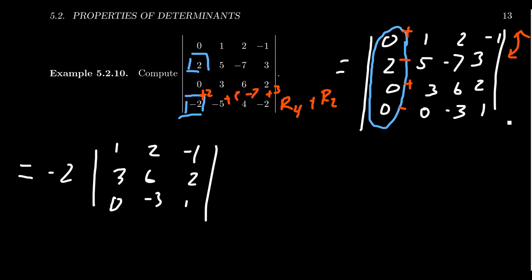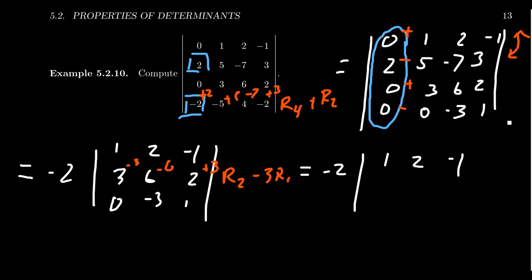For this 3×3 matrix, I want to do another replacement: row 2 minus 3 times row 1, giving us −3, −6, +3. Replacement is free, so it doesn't affect the determinant. We get: row 1: 1, 2, −1; row 2: 0, 0, 5; row 3: 0, −3, 1.